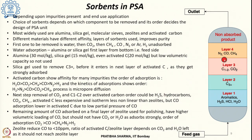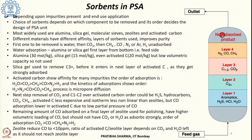With this final zeolite layer, we can reduce the carbon monoxide content to less than 10 ppm, and the unadsorbed product — pure hydrogen — can be collected at the outlet.